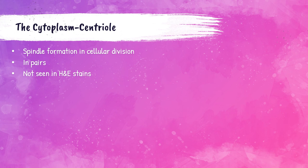Centrioles come in pairs and are responsible for spindle formation in the cell's division process. These cannot be seen with the H&E stain.